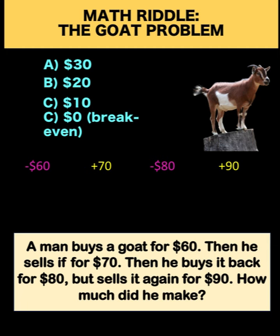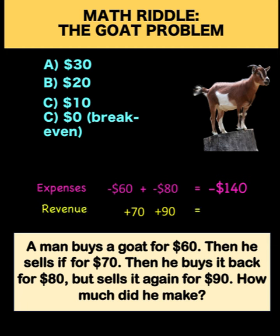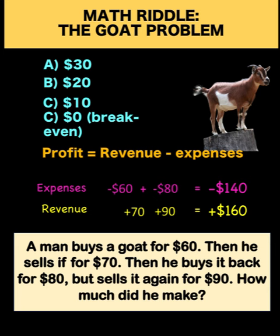Let's group together all the expenses. The man bought the goat for $60 — that's money going away. And the second time he bought the same goat for $80. So the total expenses are negative $60 plus negative $80, which equals negative $140. Then the first time he sold the goat, he sold it for $70. And the second time he sold the goat, he sold it for $90. So there is a total revenue of $160.